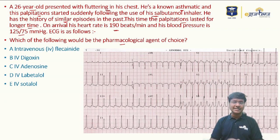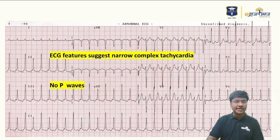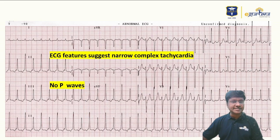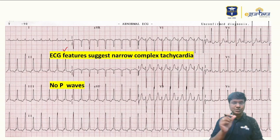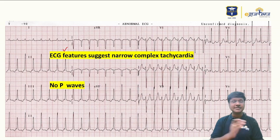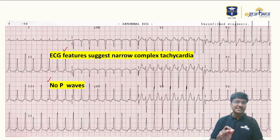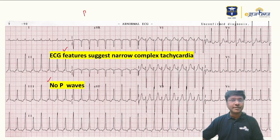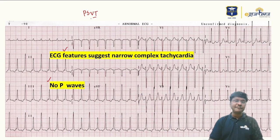Looking at the ECG, the abnormalities are as follows. It is suggestive of a narrow complex tachycardia. The QRS complexes are within less than 70 milliseconds, and there is no P wave visible. Narrow complex tachycardia with no P wave is suggestive of paroxysmal supraventricular tachycardia, or PSVT. The first-line management in PSVT is vagal maneuvers.